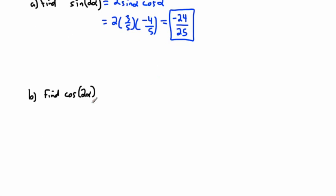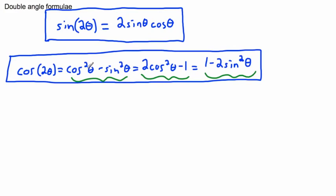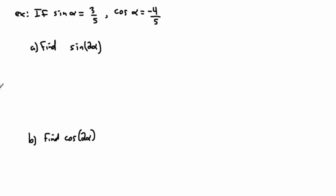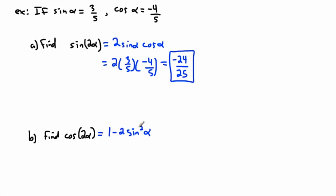Now for cosine of two alpha. There are lots of choices — we can use the first, second, or third version of the cosine double angle formula. Let's use one minus two sine squared theta, just for variety. So cosine of two alpha equals one minus two sine squared alpha.